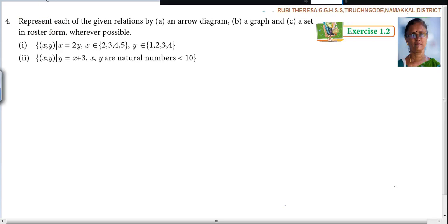Represent each of the given relations by an arrow diagram, a graph, and a set in roster form, wherever possible. First problem: X, Y such that X equals 2Y. X is an element of 2, 3, 4, 5. Y is an element from 1, 2, 3, 4, this set. So X belongs to this set, Y belongs to this set.